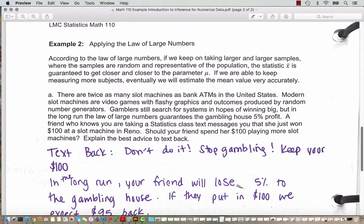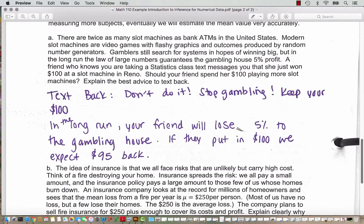So question A tells us there are twice as many slot machines as bank ATMs in the United States. Modern slot machines are video games with flashy graphics and outcomes produced by random number generators. Gamblers still search for systems in hopes of winning big. But in the long run, the law of large numbers guarantees the gambling house 5% profit. A friend who knows you are taking a statistics class text messages you that she just won $100 at a slot machine in Reno. Should your friend spend $100 playing more slot machines?